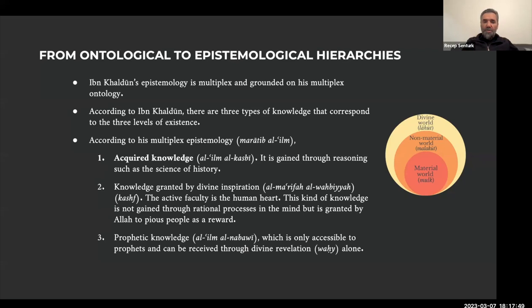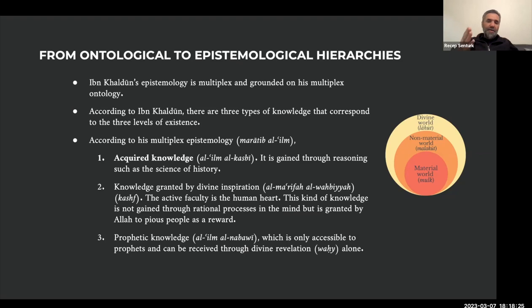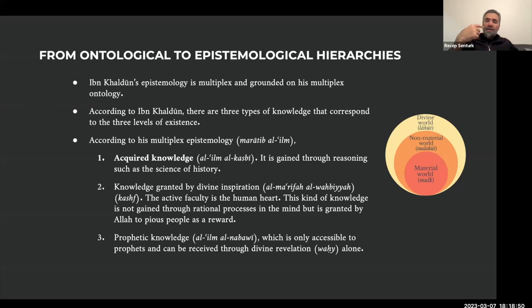The second type of knowledge is al-ilm al-ma'rifa al-wahbiyya — the gifted knowledge. It is granted by God and comes to people through divine inspiration, kashf or ilham. The active faculty is the human heart. This kind of knowledge is not gained through rational processes in the mind, but is granted by Allah to pious people as a reward. There is a Quranic verse that clearly demonstrates this: have taqwa, then Allah will teach you. So taqwa brings a particular type of knowledge, and in order to have taqwa you need al-ilm al-kasbi first.